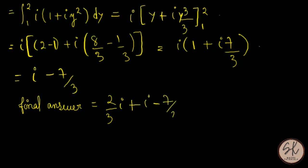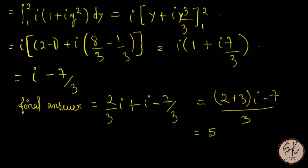Adding: i − 7/3 plus 2i/3 gives (2 + 3)i/3 − 7/3 = 5i/3 − 7/3. So the final answer is (5i − 7)/3.